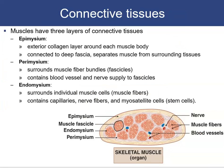Muscles have three layers of connective tissue that subdivide the muscle. The first is the epimysium, the exterior layer of collagen fibers surrounding the entire muscle body. For the bicep, the epimysium covers the whole outside. It is connected to the deep fascia and helps to separate muscles from surrounding tissues.